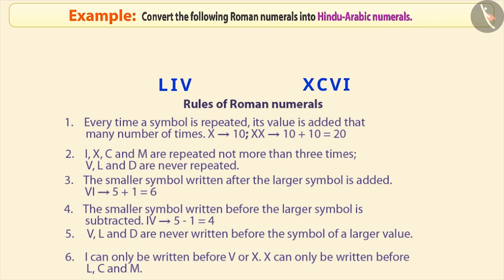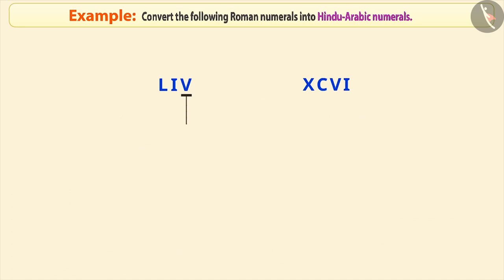Next example: convert the following Roman numerals into Hindu-Arabic numerals. Look at this Roman numeral. To convert them to the Hindu-Arabic number system equivalent, we observe the numerals from right to left. Following the rules, we can convert them to the Hindu-Arabic numerals.